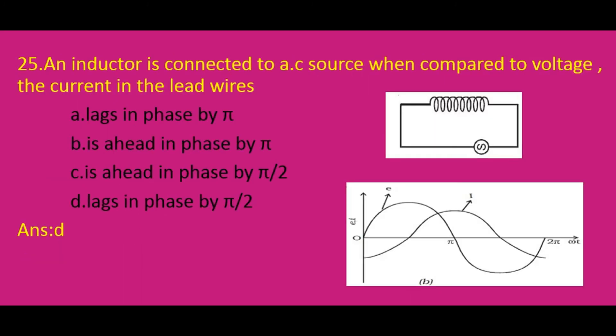An inductor is connected to an AC source — when compared to the voltage, the current in the inductor? When an inductor is connected to an AC source, the current lags behind the voltage by a phase angle of π/2. So the answer is D: lags in phase by π/2. That's all friends, thank you.